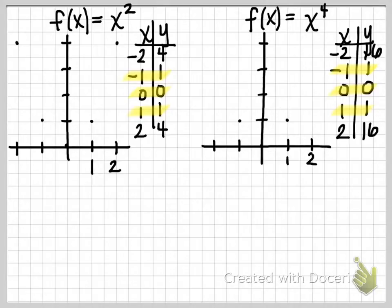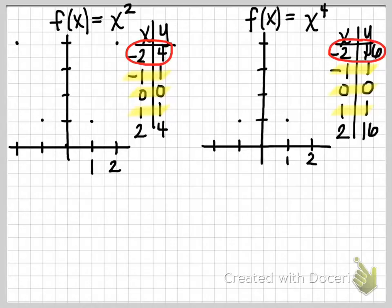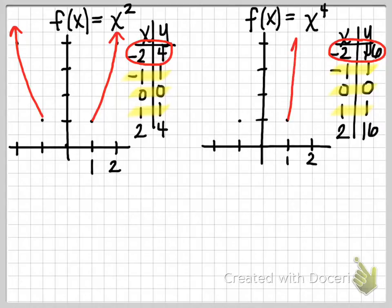Let's look at what's happening on the outside, away from the origin. For the parabola, when x is negative 2, y is 4, whereas for y equals x to the fourth, when x is negative 2, we get a much larger y value. Both functions go to positive infinity on the left and right, but on y equals x to the fourth the graph is growing much more quickly — all the way up to positive 16 — so you should have a steeper graph on both sides because it's growing more rapidly.